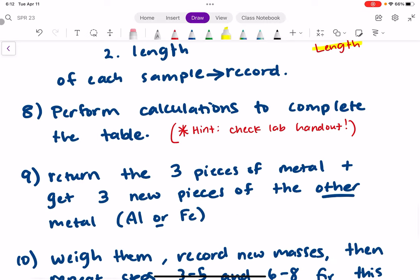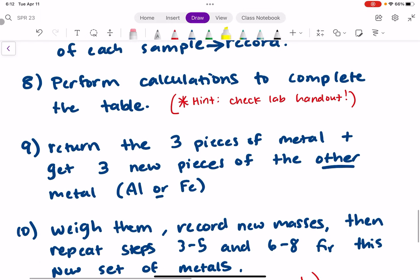In step eight, you're going to be performing calculations to complete that table. So you'll notice there are a lot of different columns that we aren't actually measuring physically in lab. So you're going to have to perform calculations to figure those out. If you get stuck, check your lab handout. There's some information in there about how to do those calculations.